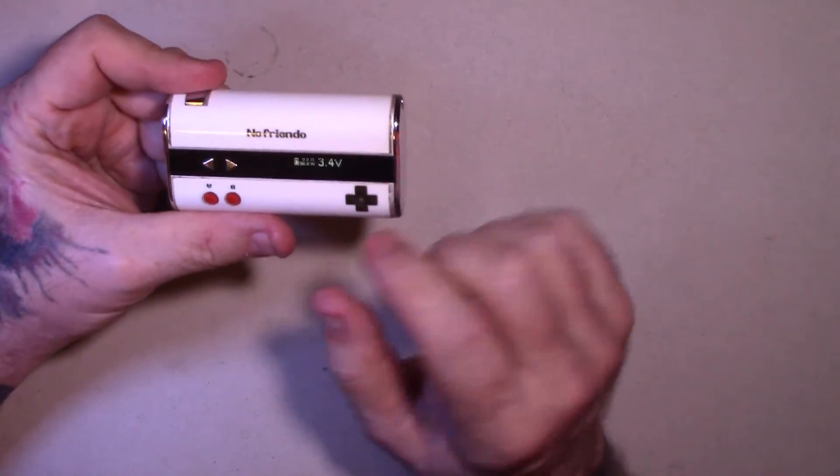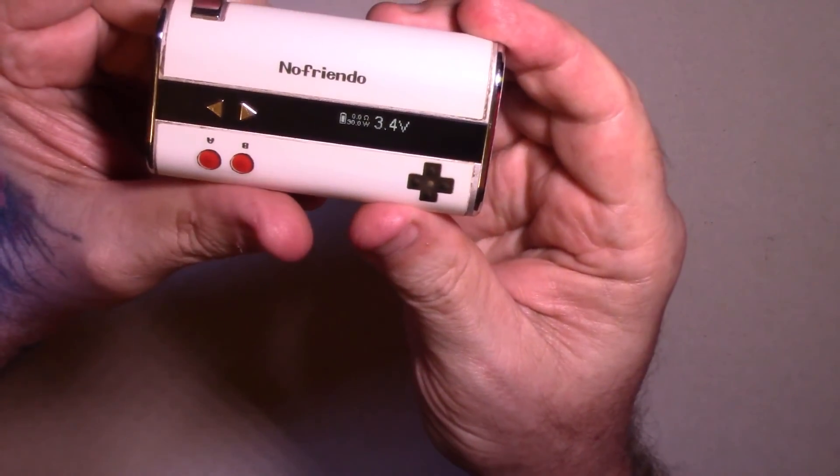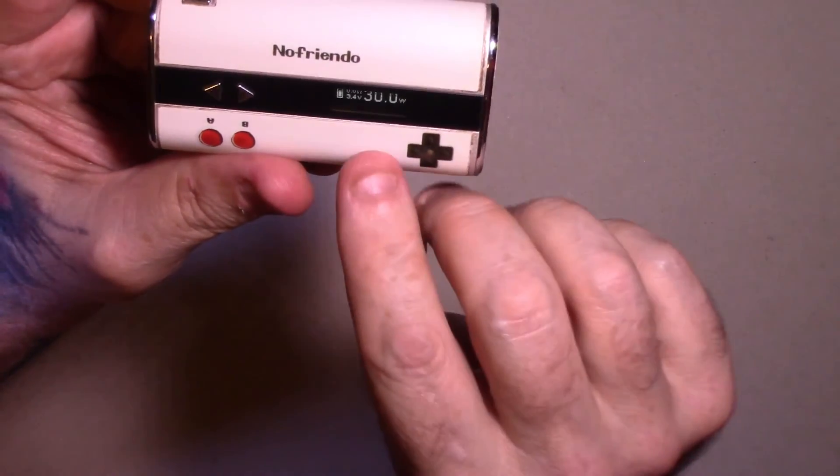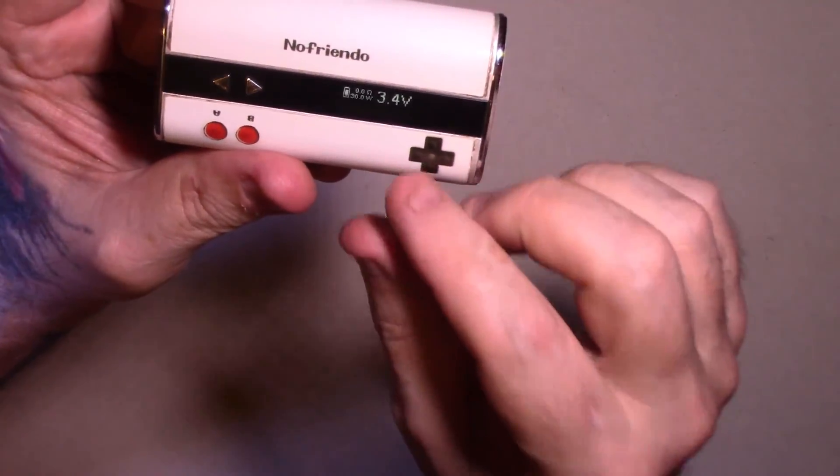Well, in the volt setting - this one is in volt setting right now. Three clicks and it will go over to watt. So in this case, 30 watts equals 3.4 volts.